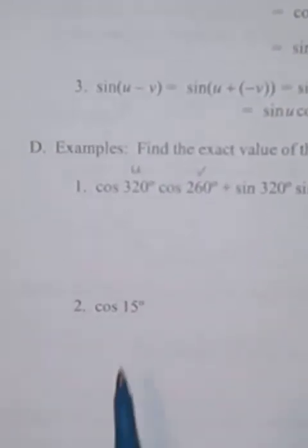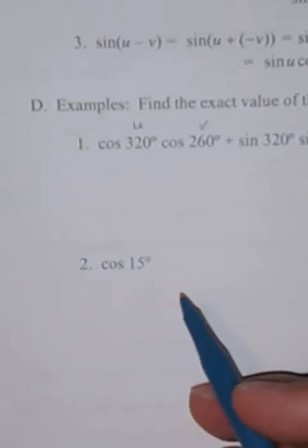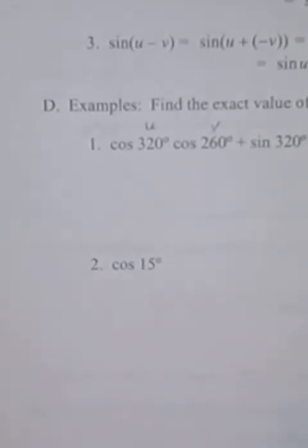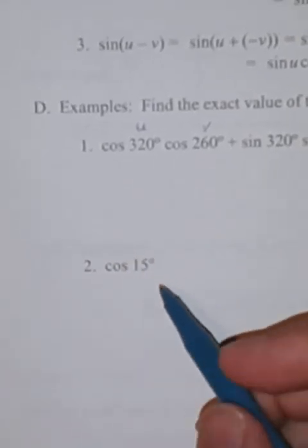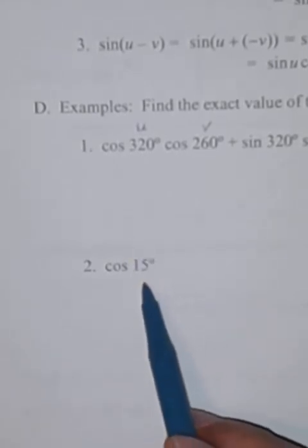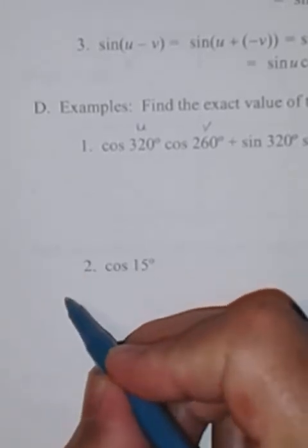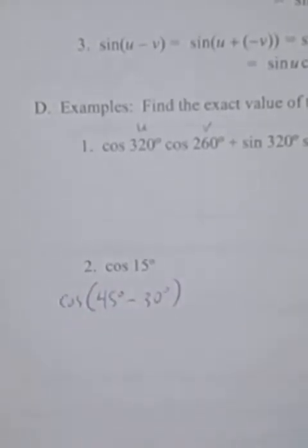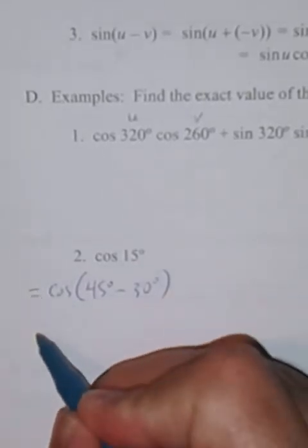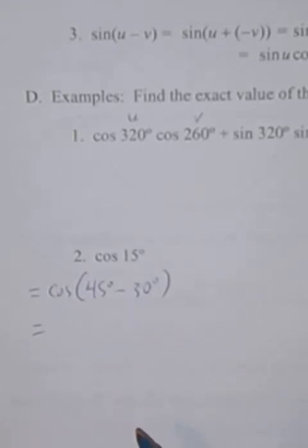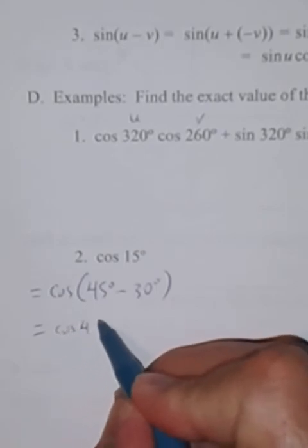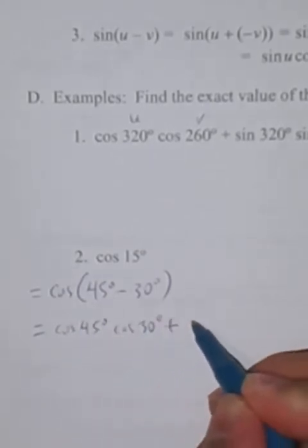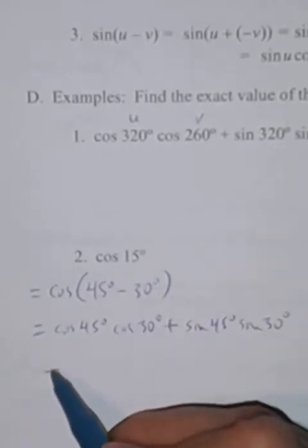Example two: find the exact value of cosine(15°) — exact means don't use a calculator. We can write cosine(15°) as cosine(45° minus 30°). Applying the cosine difference formula: cosine 45° cosine 30° plus sine 45° sine 30°. We'll plug in the known values and finish this in class.